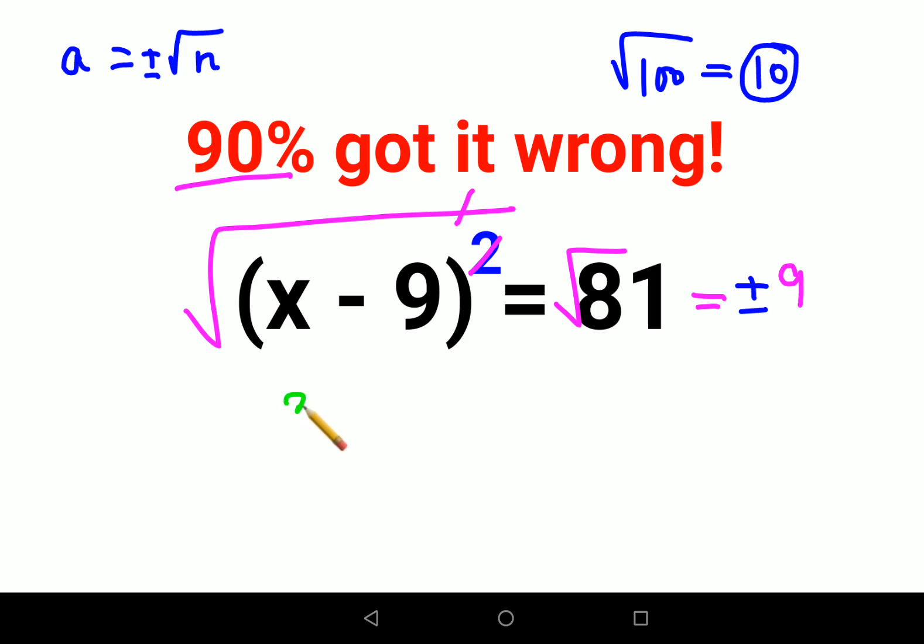So now what we do is x minus 9 equals to - first we'll take plus 9, so here we'll have x equals to 9 plus 9, so therefore I can say x value is 18.